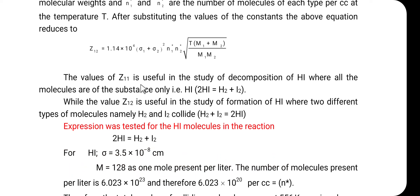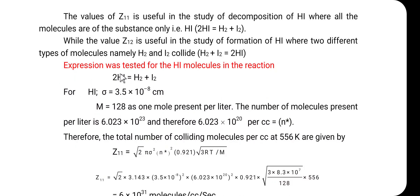The value of Z11 is useful in the study of the decomposition of hydrogen iodide, where all the molecules are of the same substance: 2HI → H2 + I2. While the value of Z12 is useful in the study of the formation of HI, where two different types of molecules, H2 and I2, collide to give: H2 + I2 → 2HI. We will now consider the expression tested for the hydrogen iodide molecule in the reaction 2HI → H2 + I2.